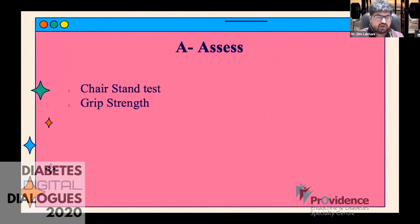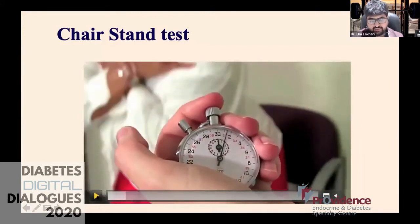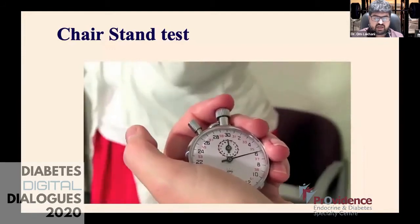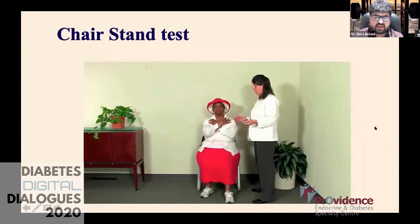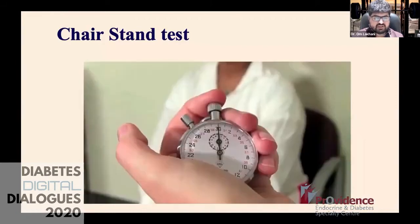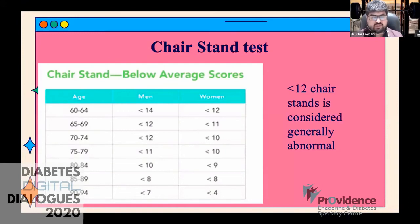To assess for sarcopenia, you can use two simple things: a chair stand test and a grip strength test. The chair stand test is very simple: set a 30-second timer and ask the patient to stand up and down from a chair as quickly and frequently as possible using only their lower body strength. The cutoff is 12 repetitions — if the score is less than 12, that is considered abnormal. Cutoffs do vary by age, but generally less than 12 should be flagged.